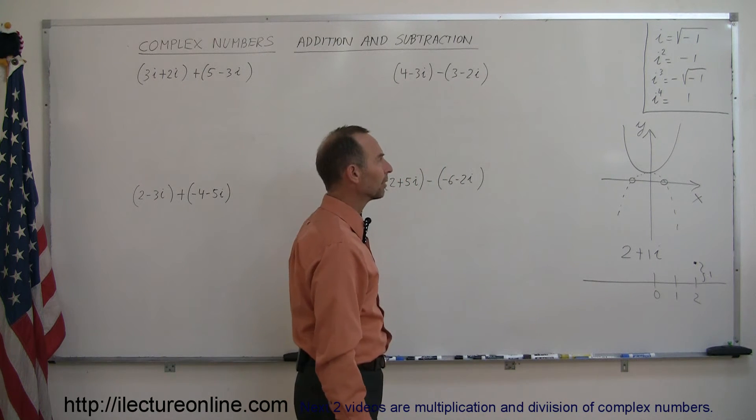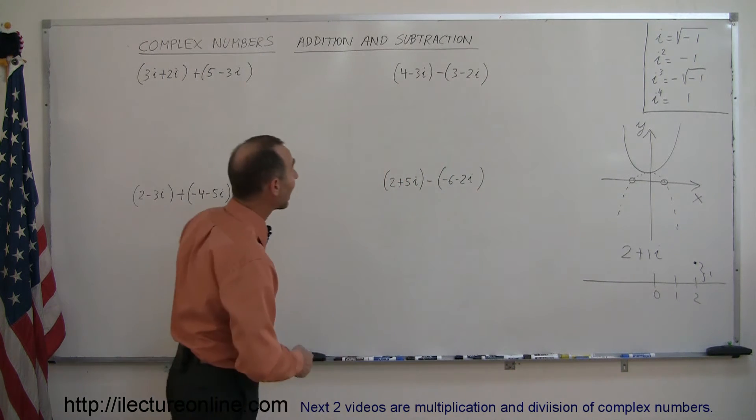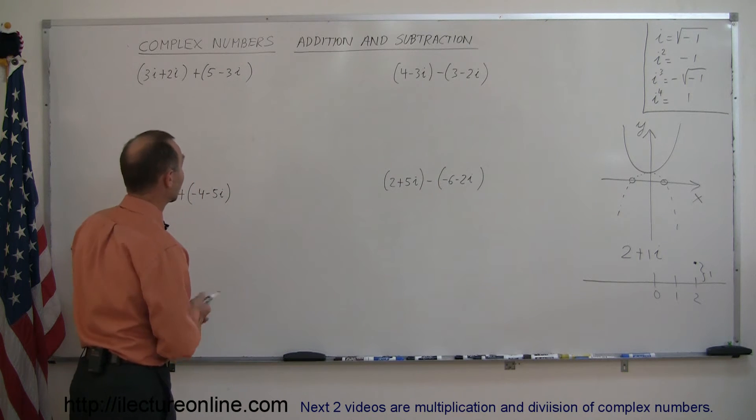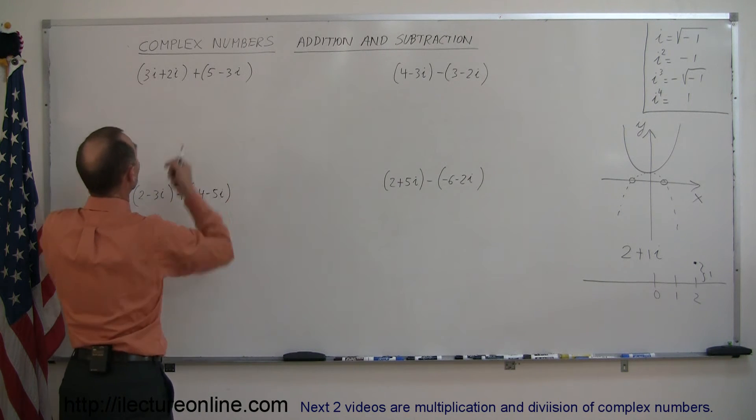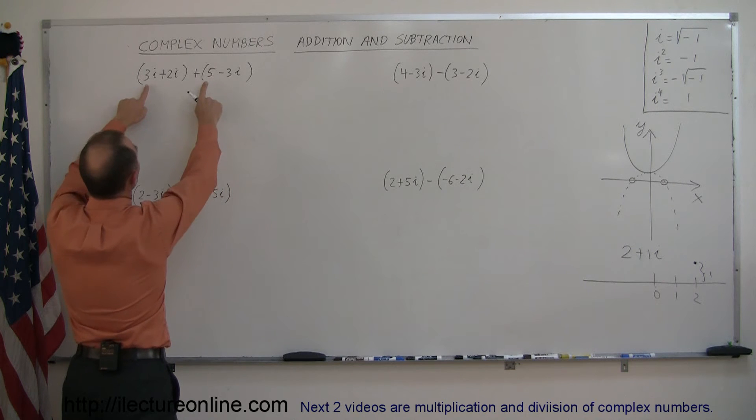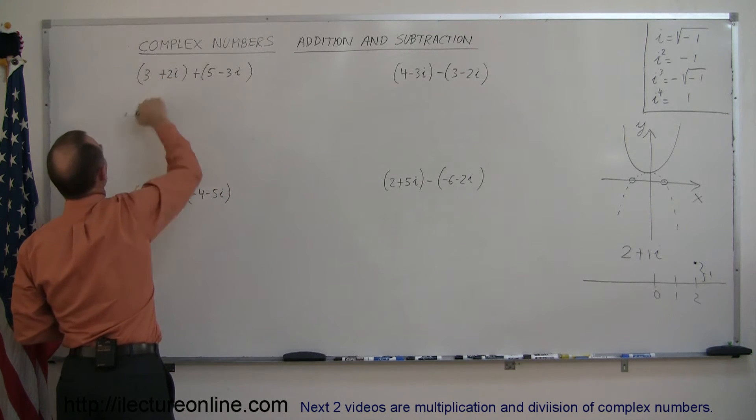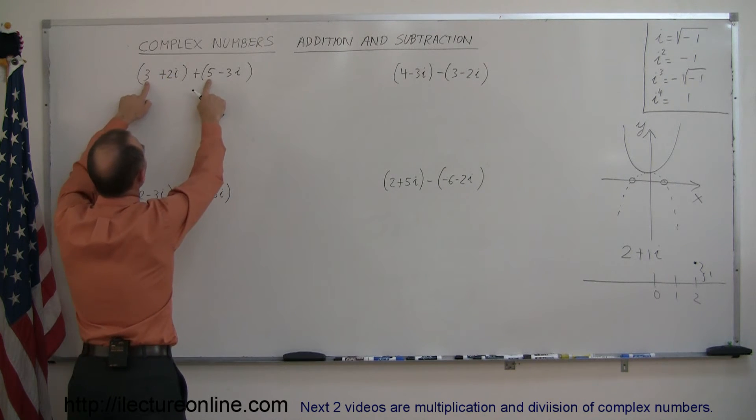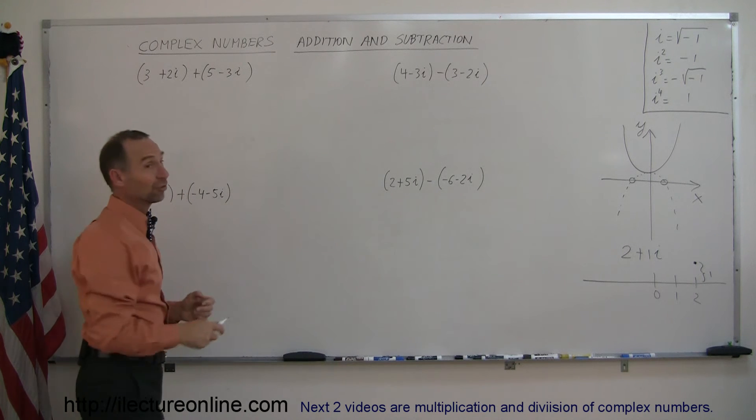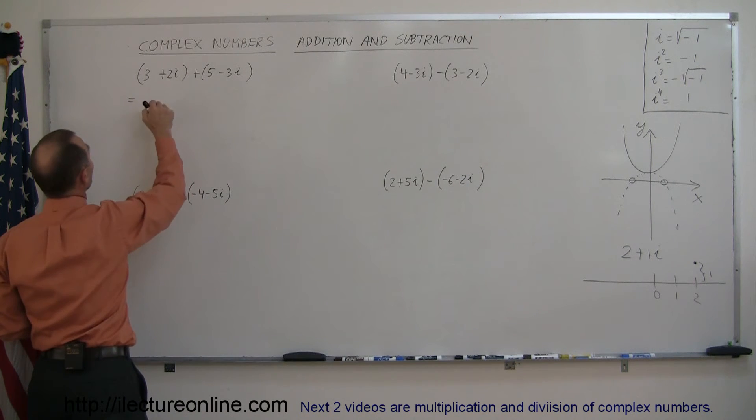So without further ado, let's go and see how we need to add and subtract these things. It's a simple rule actually. When you add two complex numbers together, you're going to add the real parts together, and then you're going to add the imaginary parts together. Simply a simple algebraic addition.